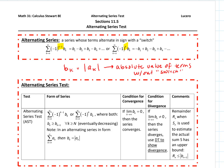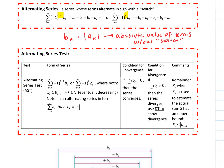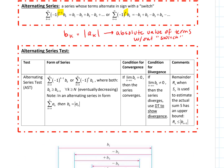If we have an alternating series and we find b sub k, and it turns out that b sub k is eventually decreasing, then if the limit of b sub k equals zero, the series will converge. If it does not equal zero, we bounce out of the alternating series test and go to the divergence test to show divergence.